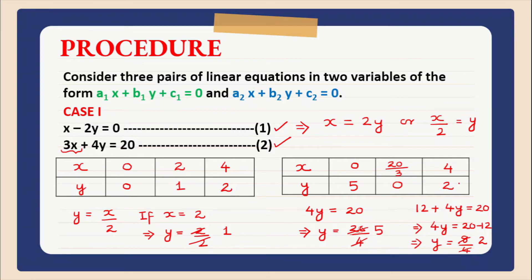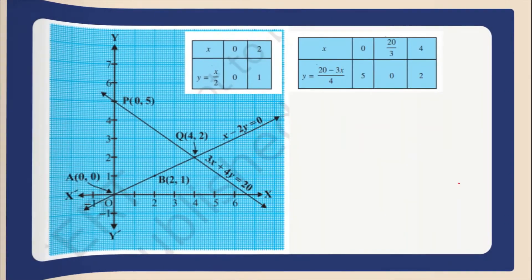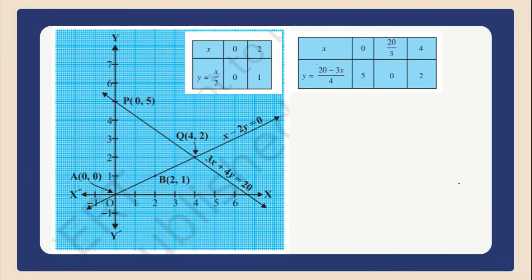Now let us plot these points on graph and you will get something like this. We have already learned theoretically how to check whether the lines will be intersecting or not — you can also cross-check and verify. Since these two lines are intersecting each other at point (4, 2), the system has a unique solution.